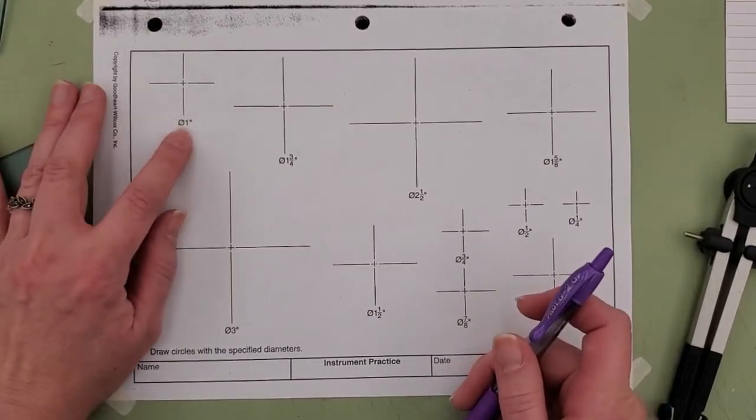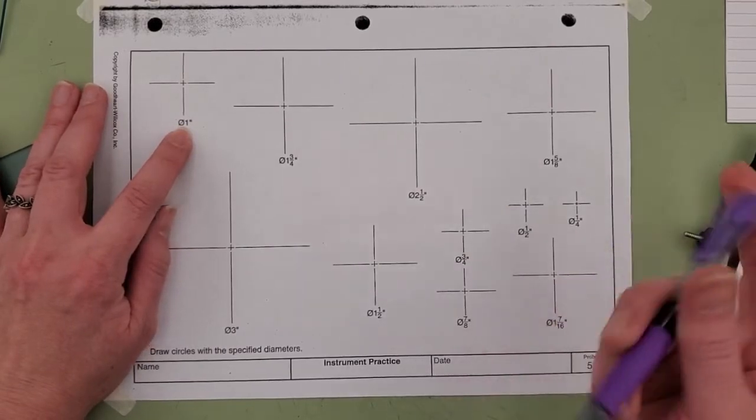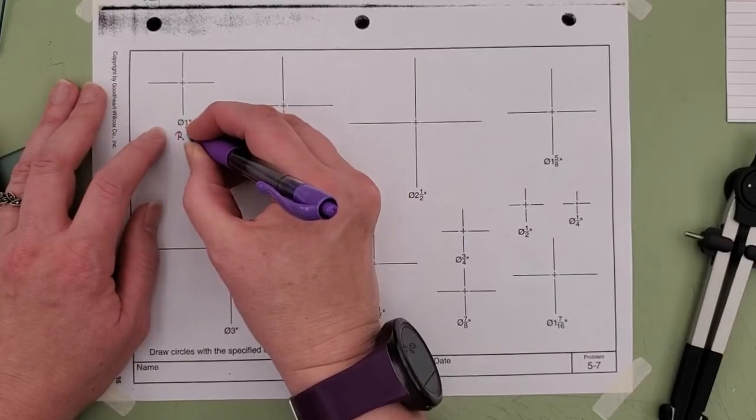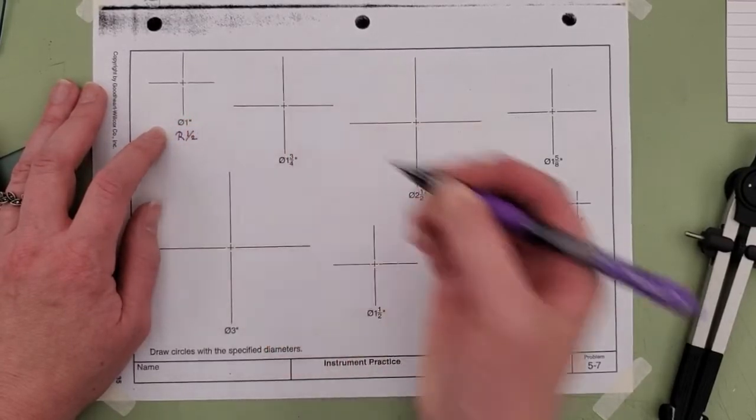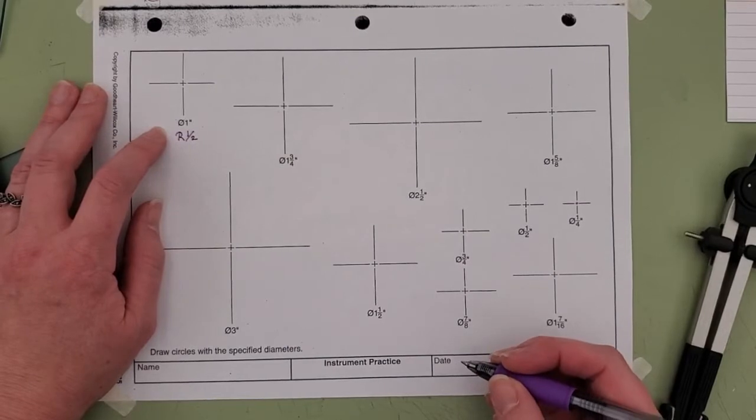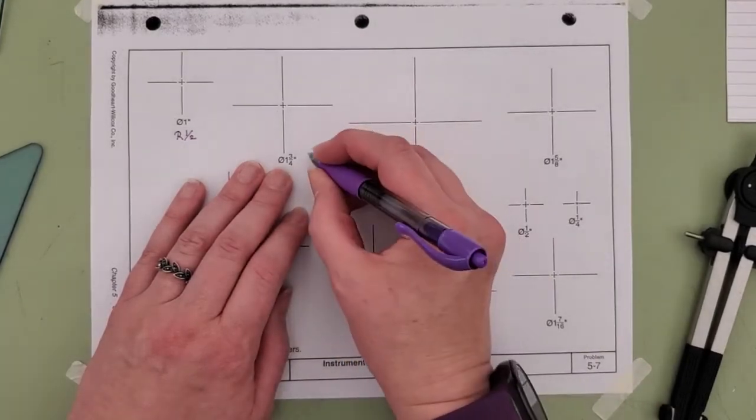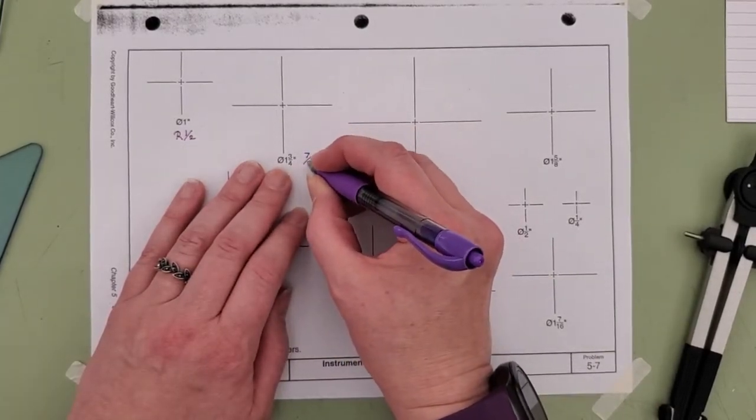We have a one inch diameter circle, and to find the radius we just need half of that, so radius equals one half. To get half of one and three fourth inch, radius is going to be seven eighths.